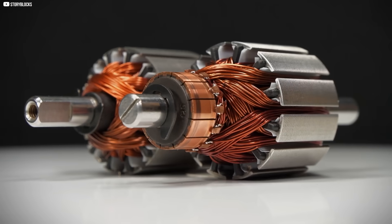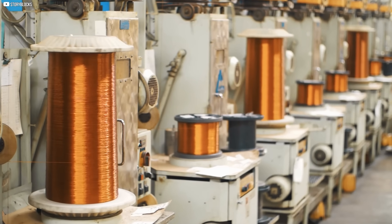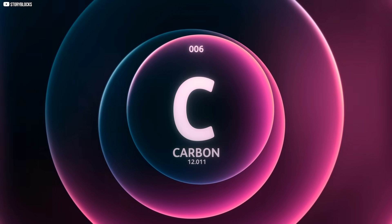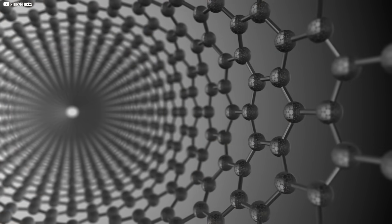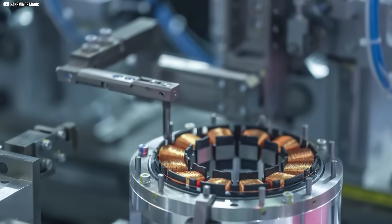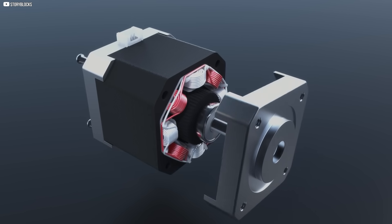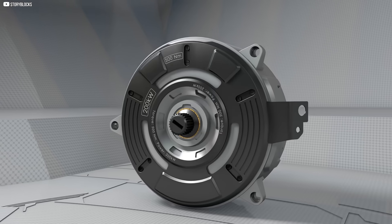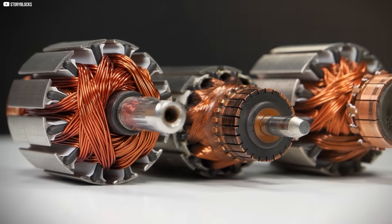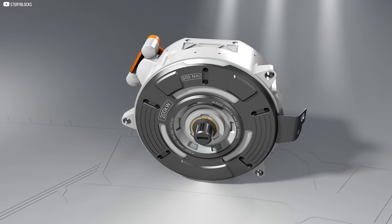For over a hundred years, electric motors spoke the language of metal. Their heartbeat was copper. Their strength was aluminum. But now that language is changing. In a quiet corner of the world, carbon is taking its place. Light, flexible, and engineered at the smallest scale imaginable, it's rewriting the rules of motion itself. This isn't just about making motors better. It's about making them different. Lighter, softer, and more adaptable than ever before. The journey from lab bench to factory floor will take time. But when it happens, you'll know. Because your next motor might hum with carbon.